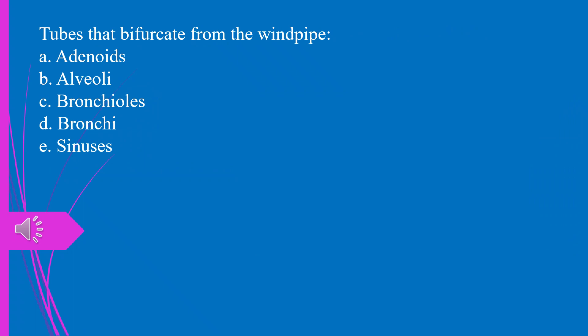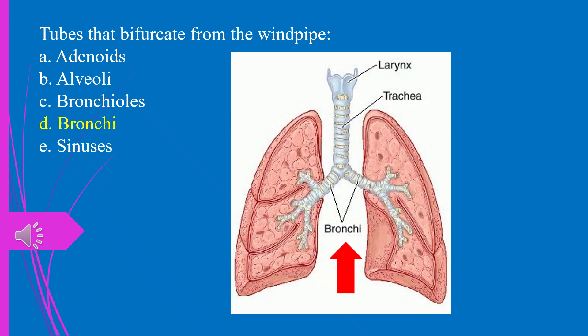Question 43. Tubes that bifurcate from the windpipe: a) adenoids, b) alveoli, c) bronchioles, d) bronchi, e) sinuses. The answer is d, bronchi.